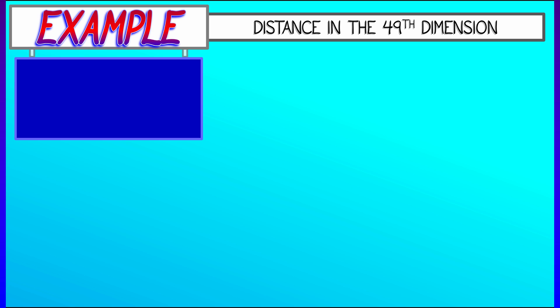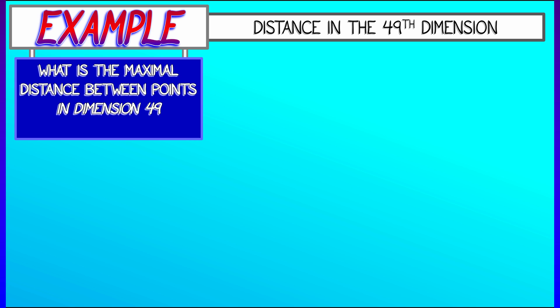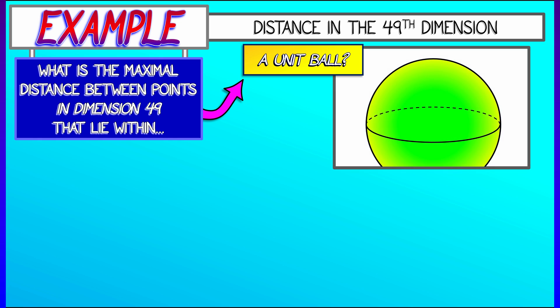Let's keep going and consider what is the maximal distance between points in a 49-dimensional space when I look at points that lie within a certain region. Let's start off with something nice, not so bad. We're going to start off with the unit ball in a 49-dimensional space. That is the set of all points that is within distance one of the origin. That's going to look kind of like a nice round ball does in R3. And it's going to have very similar properties.